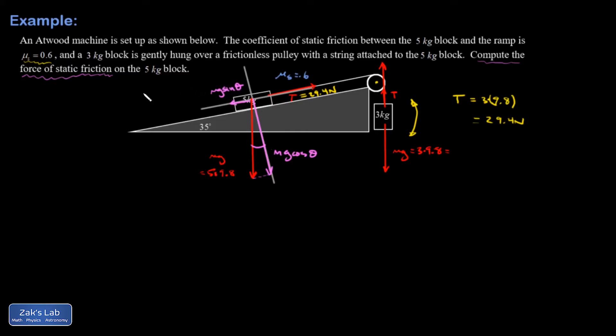All right. Then I can do this piece, mg sine theta. And that's 5 times 9.8 times the sine of 35 degrees. I get 28.1 for that.